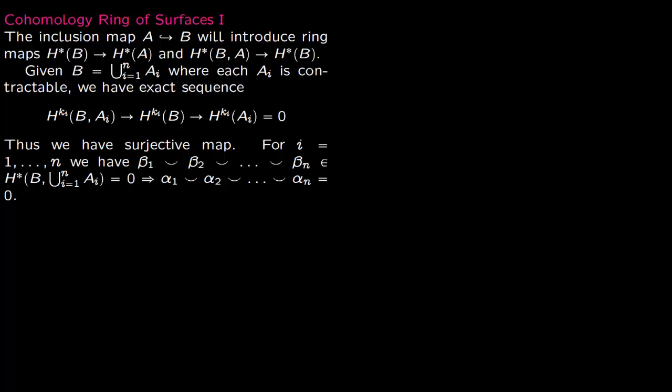In this lecture we talk about the cohomology ring of surfaces. In the lecture on cup product we talked about how cup product naturally introduces a graded ring structure, and here we are going to compute certain things.